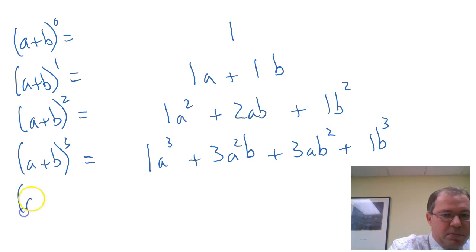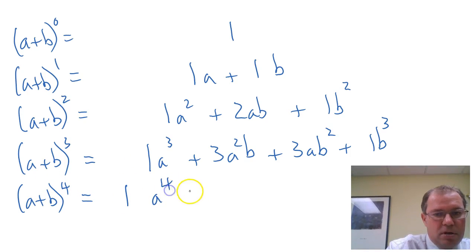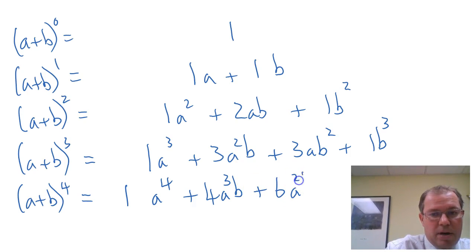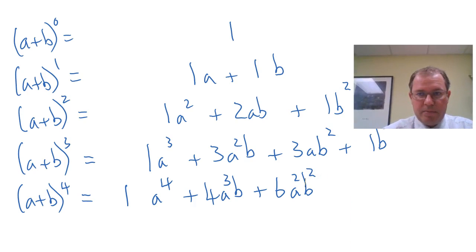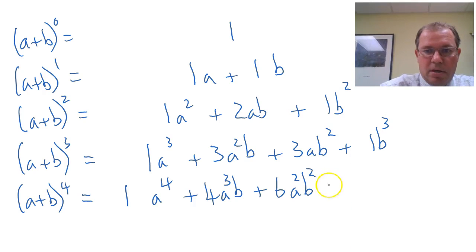And finally, if we do a plus b to the power of 4, and again you might have quite a bit of algebra to do, you'd get 1a to the power of 4 plus 4a cubed b plus 6a squared b squared, I'll just move this up here, plus 4ab cubed plus 1b to the 4.